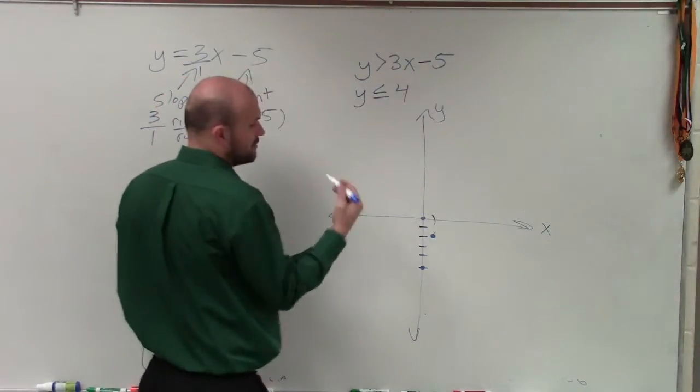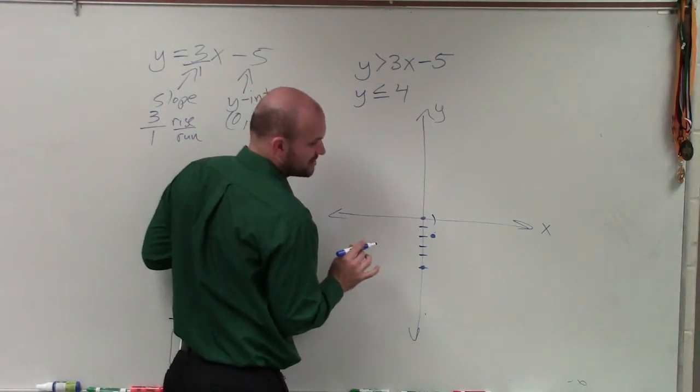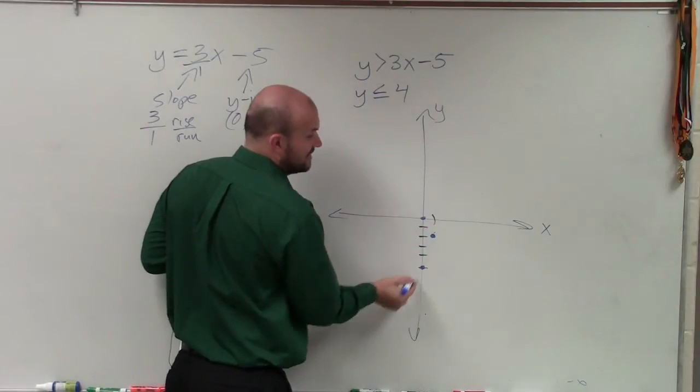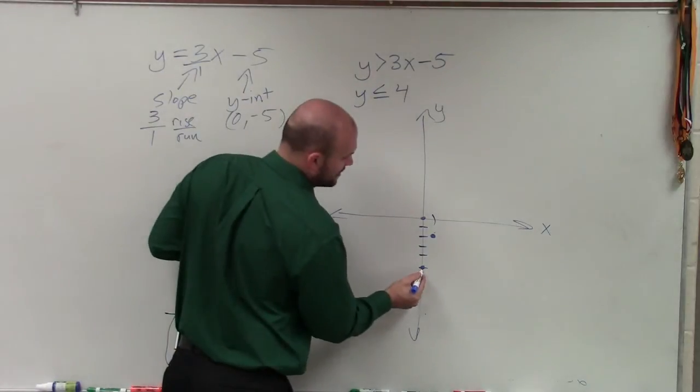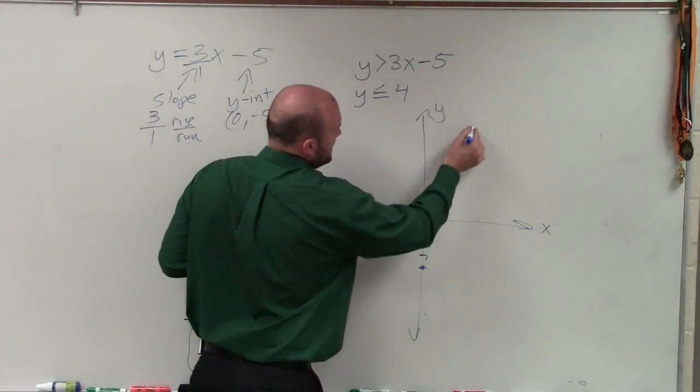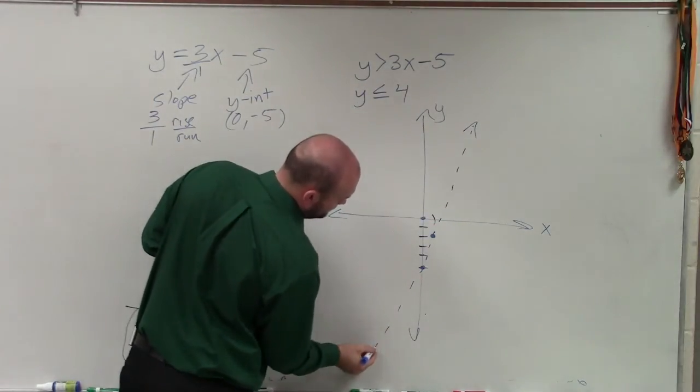And since this is greater than, not greater or equal to, it's not going to be a part of my solution. So that means any point that lies on this boundary line is not going to make the inequality true. So I'm going to represent this as a dashed line.